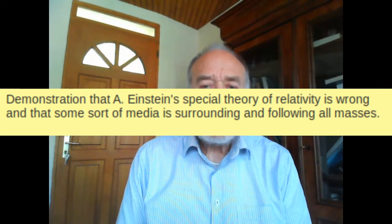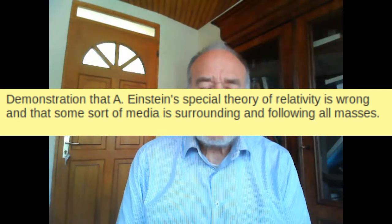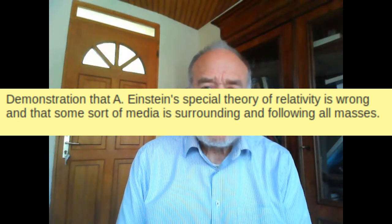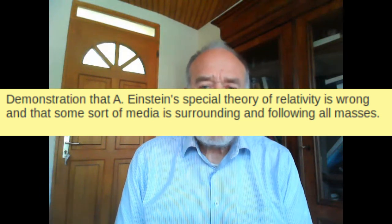Hello everybody. In this video we will demonstrate that the special relativity theory of Albert Einstein is wrong. We will also show that the Earth is surrounded by some sort of media, or ether, quantum beacon, whatever you want to call it, which surrounds the Earth and follows it in its path through the universe.